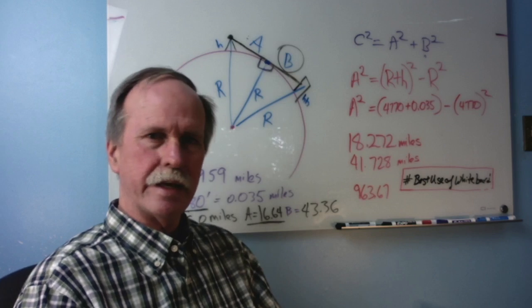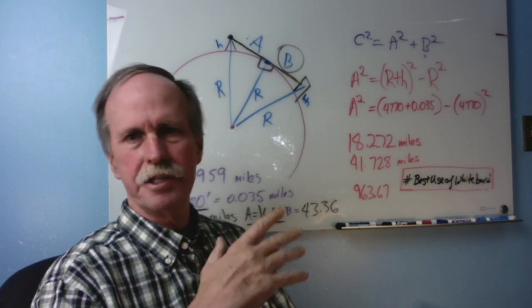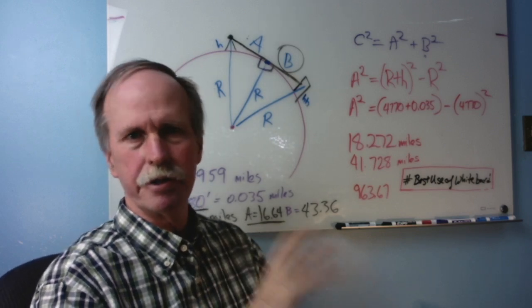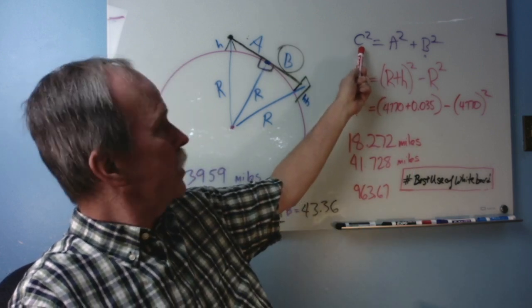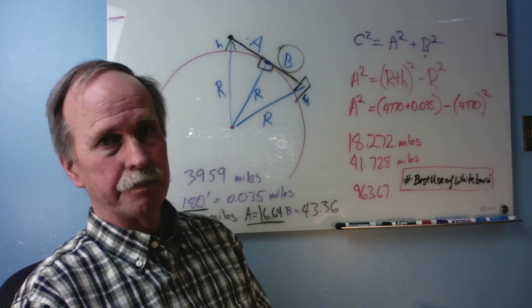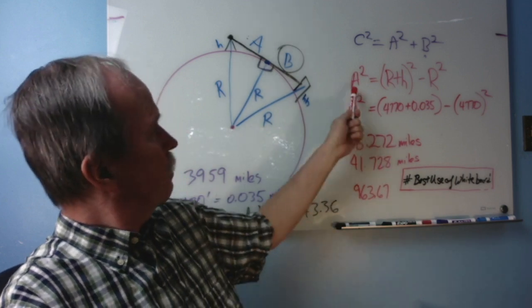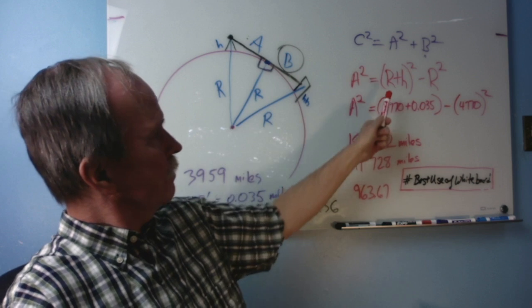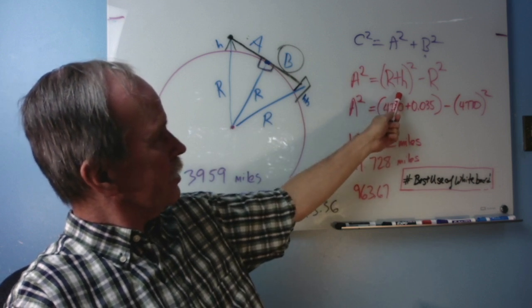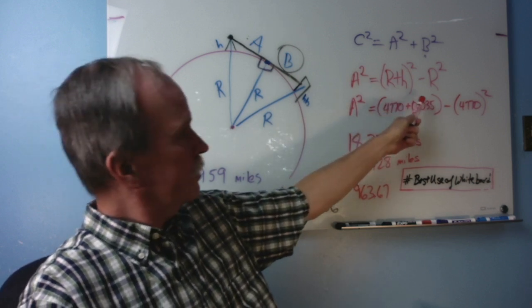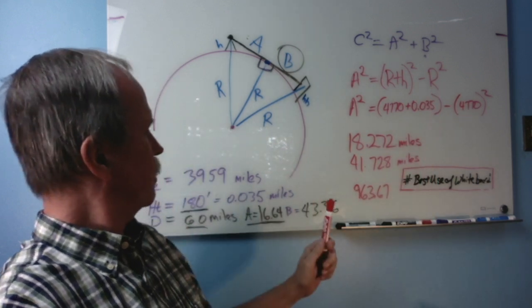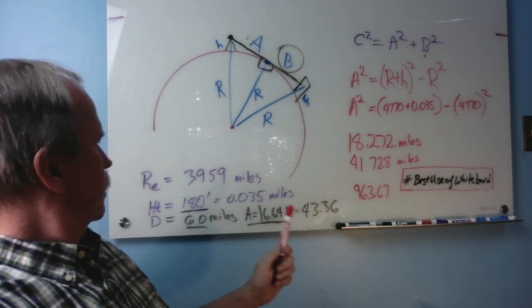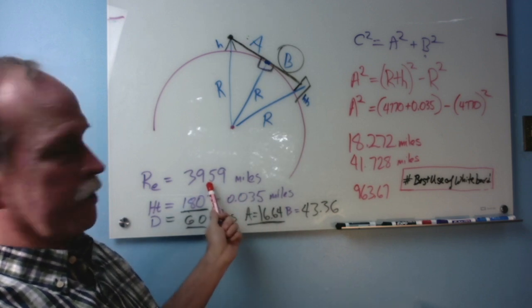Now, I went ahead and did the math and we'll just follow along real quick. This is something that you can do at home if you want. I put the pertinent numbers up. So, Pythagorean theorem. C squared equals a squared plus b squared. Well, what are these? We want to find a squared, which is that number right there. That is the radius of the earth plus the height squared minus the radius of the earth squared.